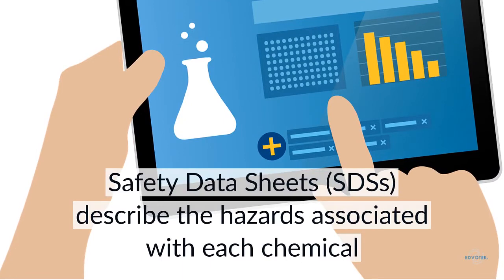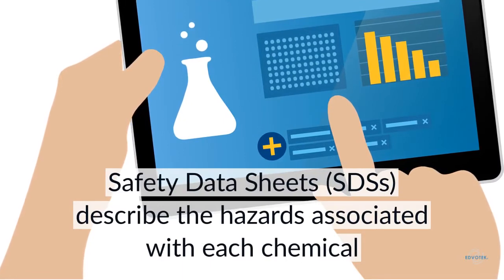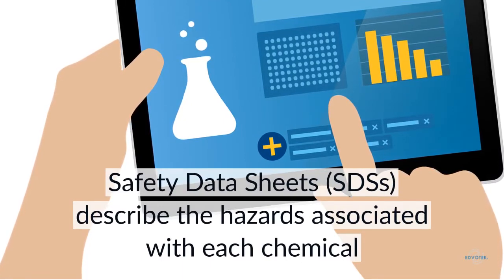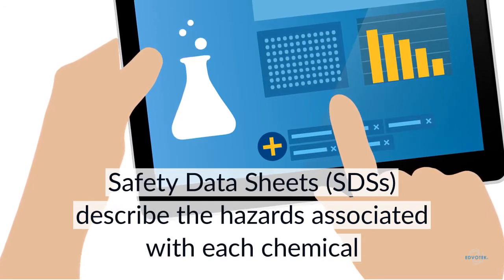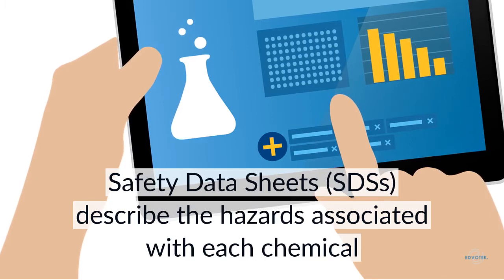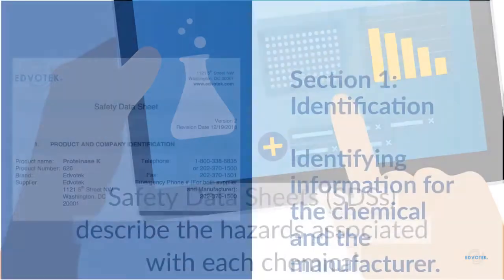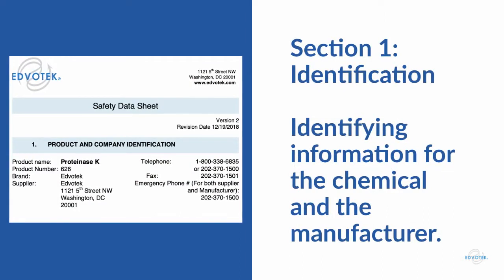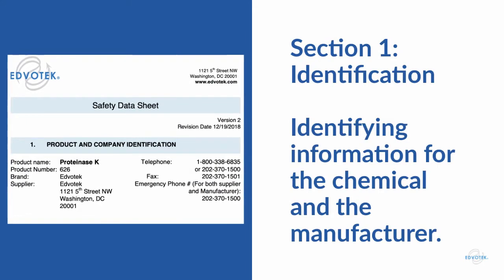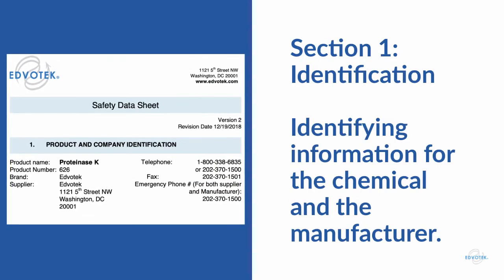Safety data sheets are comprehensive written documents that communicate the hazards associated with each product in depth. Each section of the SDS explains the hazards of the chemical products in a clear and concise manner. Section 1 includes identifying information for the chemical and the manufacturer, including the chemical's name and product number, and the manufacturer's name, address, and phone number.